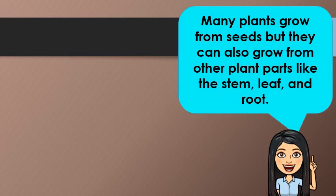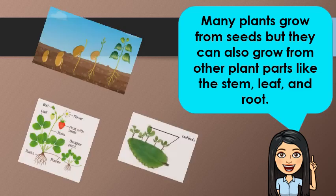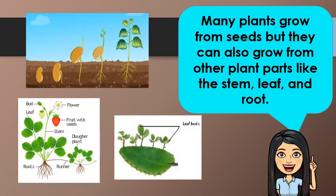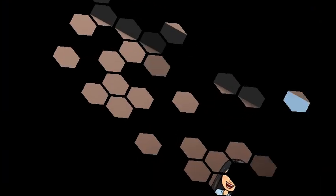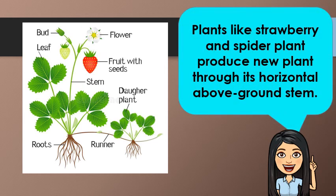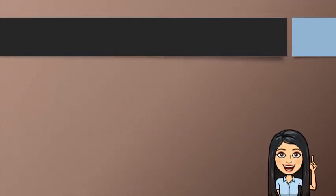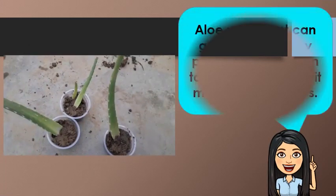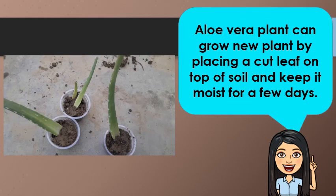How about plants? Many plants grow from seed, but they can also grow from other plant parts like the stem, leaf, and root. This is a strawberry plant. Plants like strawberry and spider plant produce new plants through their horizontal above-ground stem. This is an aloe vera plant. Aloe vera can grow new plants by placing a cut leaf on top of the soil and keeping it moist for a few days.